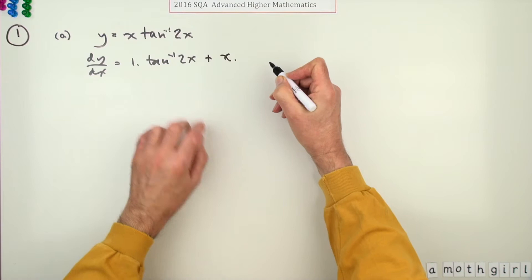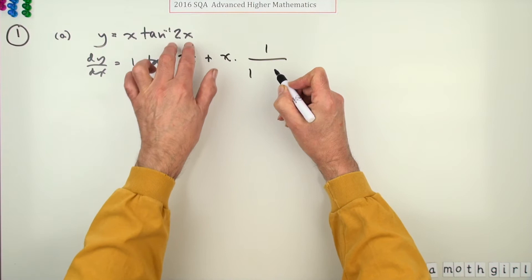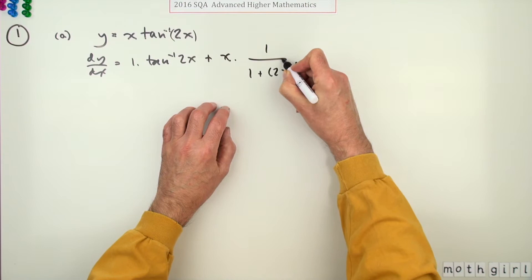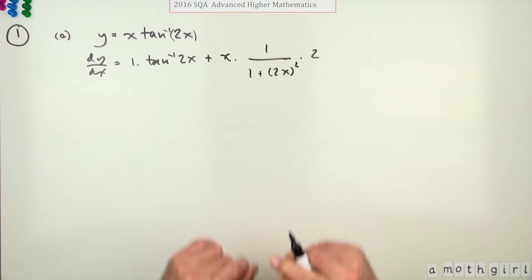x has had its turn, now differentiate inverse tan of 2x. So that'll be one over one plus whatever it's operating on squared, so one plus the 2x squared, multiplied by the derivative of that inner function which is times two.